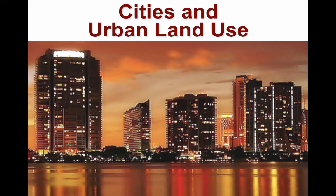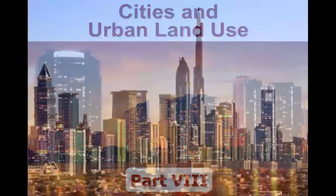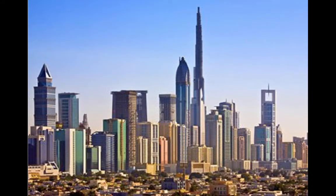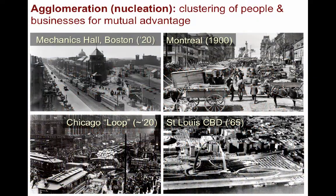Welcome to Cities and Urban Land Use Part 8. In this video we're going to look at this essential question: how did improvements in transport technology affect the size and structure of the American city over time? One of the key words to understand is agglomeration, also called urban nucleation, which is the clustering of people and businesses for mutual advantage.